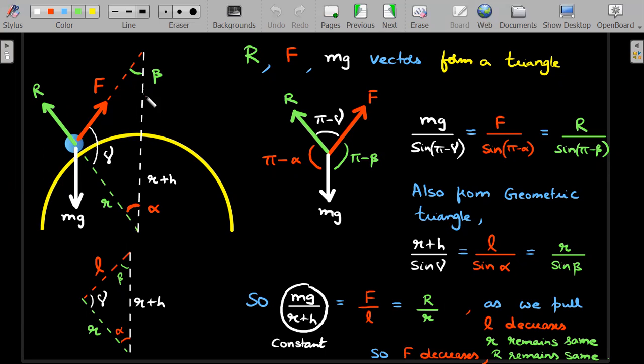So this should be 180 minus gamma that I have written here. Similarly, in terms of alpha and beta, I could write the supplementary angles in this particular vector triangle. So for this, Lamy's theorem states that the force divided by sine of the opposite angle should be a proportional value. Okay. So Mg divided by sine of this angle, F divided by the sine of the opposite red colored angle and capital R divided by sine of this should be equal. This is the Lamy's theorem.